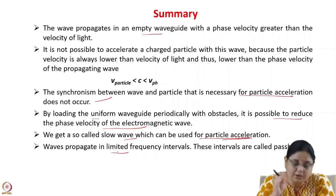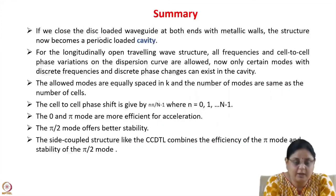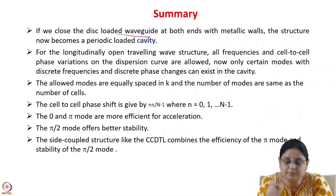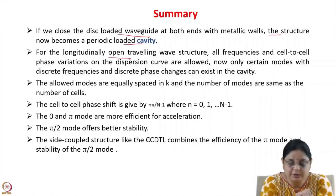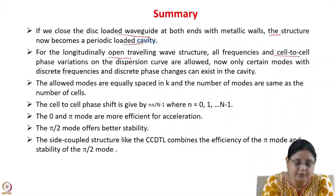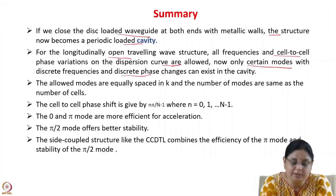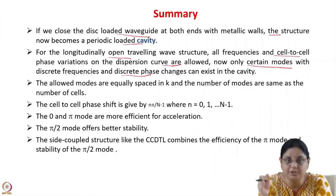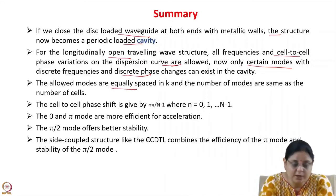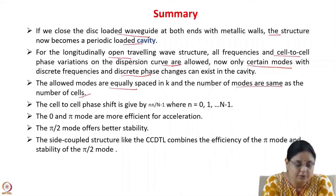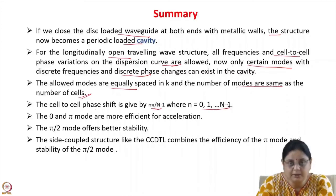Waves propagate in limited frequency intervals known as passbands when loaded with periodic obstacles. If we close this disc-loaded waveguide at both ends with metallic walls, the structure becomes a periodic loaded cavity. For the longitudinally open traveling wave structure, all frequencies and cell-to-cell phase variations of the dispersion curve are allowed. For the periodically loaded cavity, only certain modes with discrete frequencies and discrete phase changes exist due to the additional boundary condition at the ends. The allowed modes are equally spaced in K, and the number of modes is the same as the number of cells. The cell-to-cell phase shift is given by nπ/(N−1), where n = 0, 1, …, N−1.